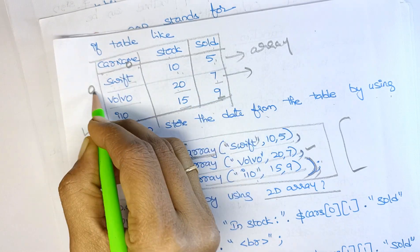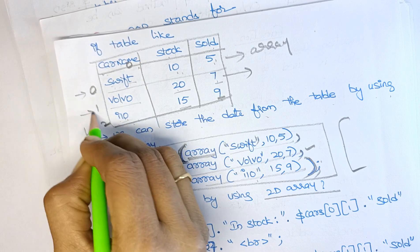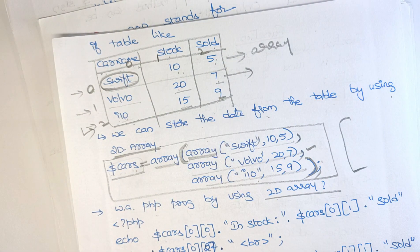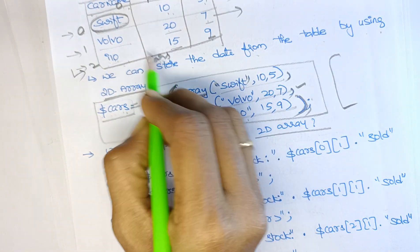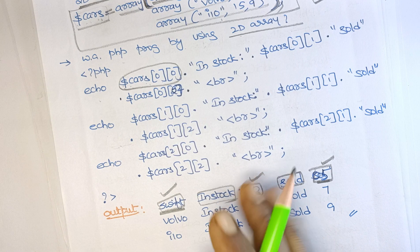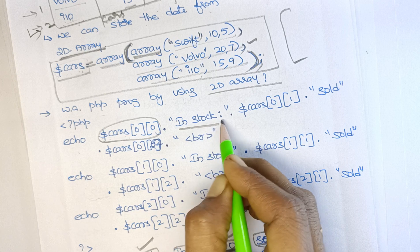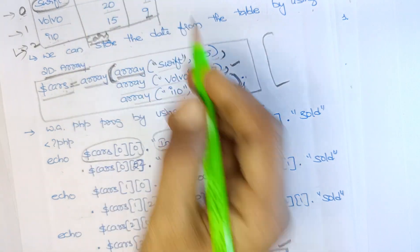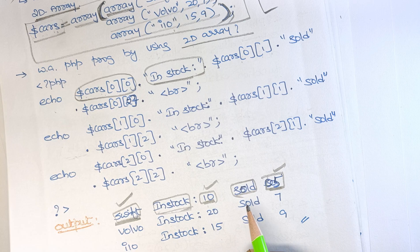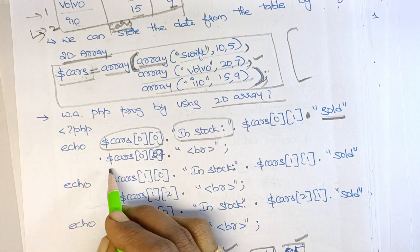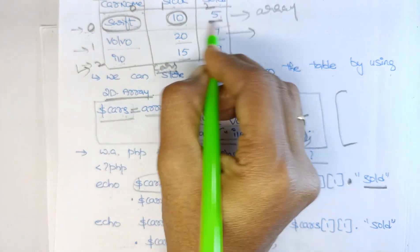Row indices are 0, 1, 2. At position [0][0] the value is 'Swift'. So echo dollar cars[0][0] prints 'Swift'. Concatenating the message 'in stock', then dollar cars[0][1] — which is 10 — prints the stock value. Next, concatenating 'sold', then dollar cars[0][2] — which is 5 — prints the sold value.